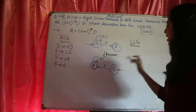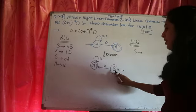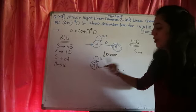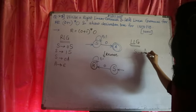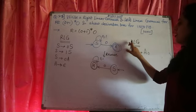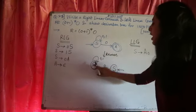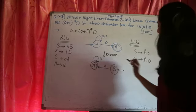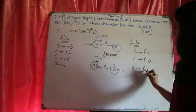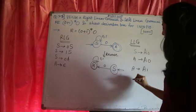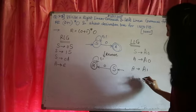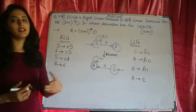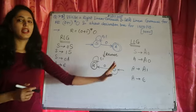For the left linear grammar, we start with the start state S. In left linear grammar, the capital letter comes on the left side. So the production rule is S → A0. Next, A → A0. Then A → A1. Now, which is the final state? A is the final state, so the extra rule for the final state is A → epsilon. So we understood this particular answer — it is very easy, and this is how we get the right linear and left linear grammar.